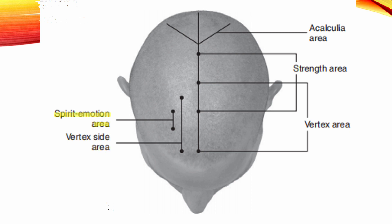Spirit-Emotion Area, also known as the Epilepsy Control Area. Location: 2.5 cm anterior to the midpoint of the anterior-posterior midline, 2 cm lateral and 2 cm in length, extending anterior. Indication: Spirit and emotional dysfunction and seizures.